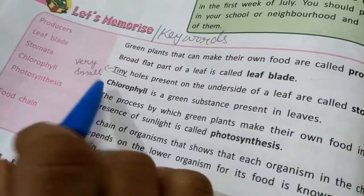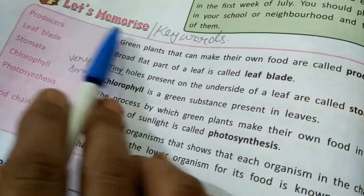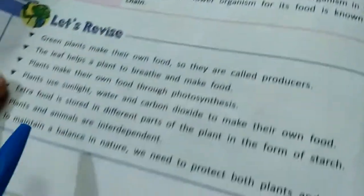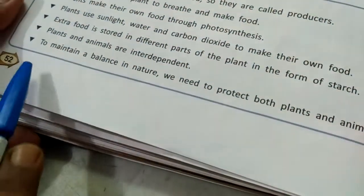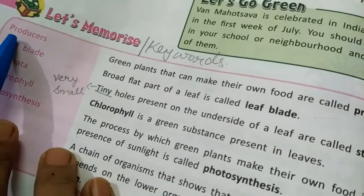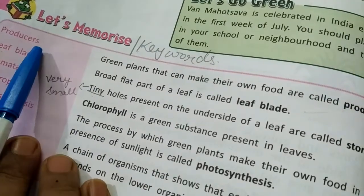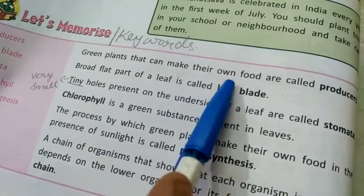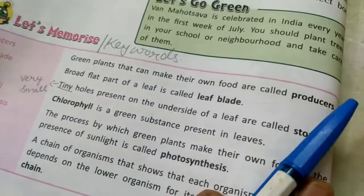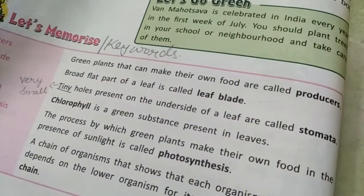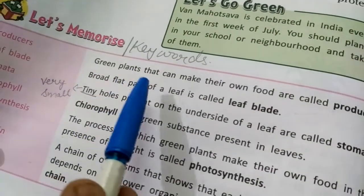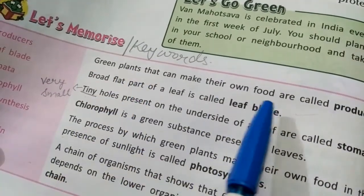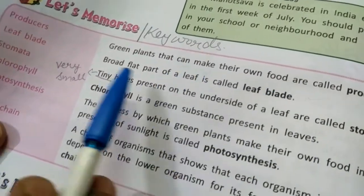The next section is about keywords given in the 'Let's Memorize' section, on page number 52 of my science book. The first keyword is 'producers.' Green plants that can make their own food are called producers. Green plants are only known by the name producers because they can make their own food by themselves.